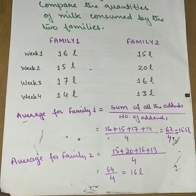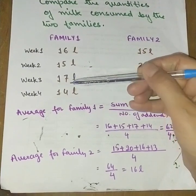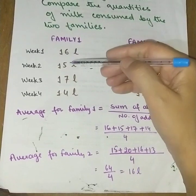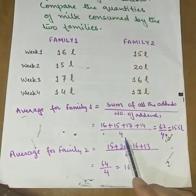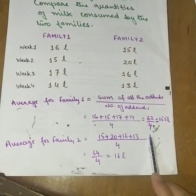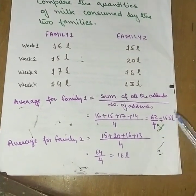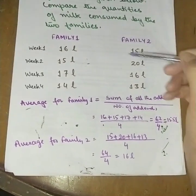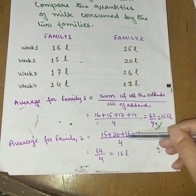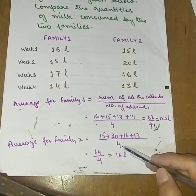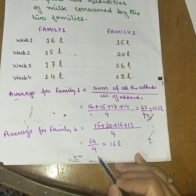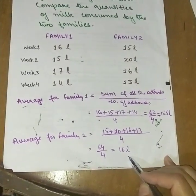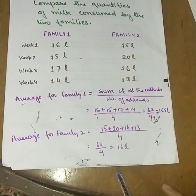Average for Family 1: sum of addends is 16 plus 15 plus 17 plus 14, divided by 4. That gives 62 divided by 4, which equals 15.5 liters. For Family 2: 15 plus 20 plus 16 plus 13, divided by 4, gives 64 divided by 4, which equals 16 liters.